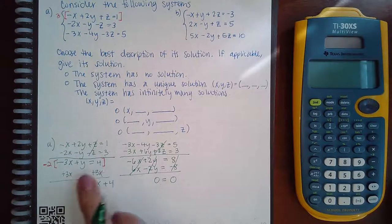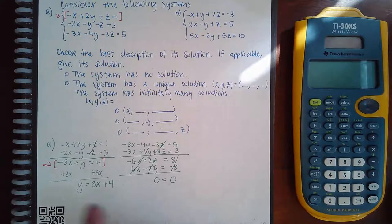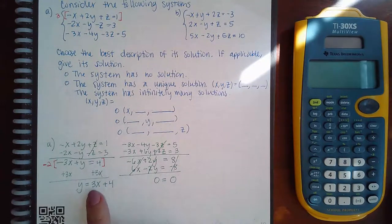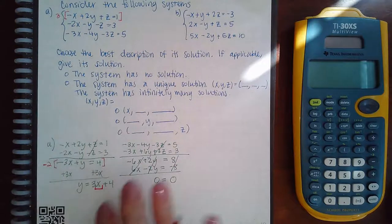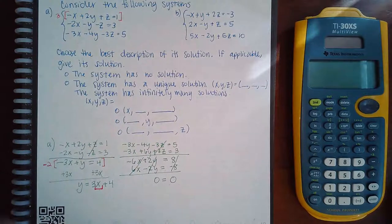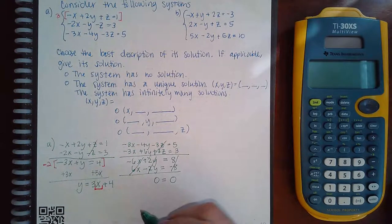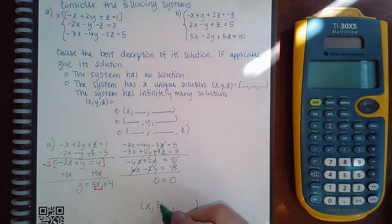Once you've isolated one of the variables, look at the other side to see what variable is there. If none have a coefficient of one, just pick one to isolate. In this case I have x on the right-hand side, so x is my independent variable. That means I choose the option where x is the independent variable. I already have an expression for y: y equals three x plus four. Now I just need to find the expression for z.